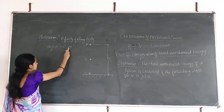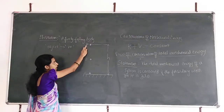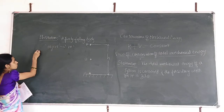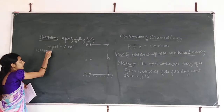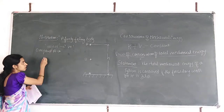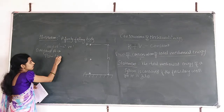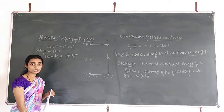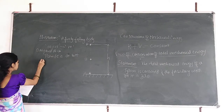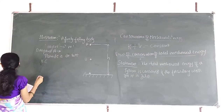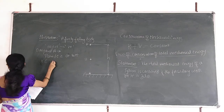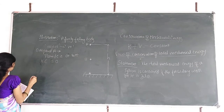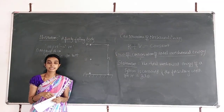At point A, the object of mass M is at height H above the ground. The particle is in the rest condition at point A. Therefore, since it is in the rest condition, the kinetic energy is zero.